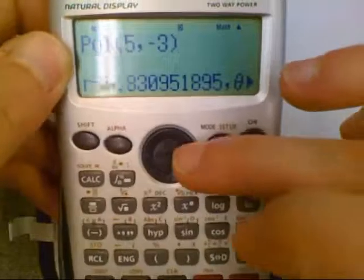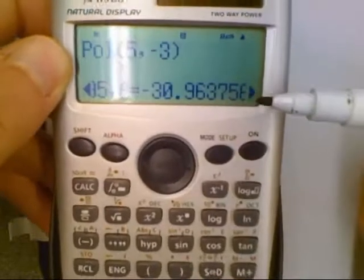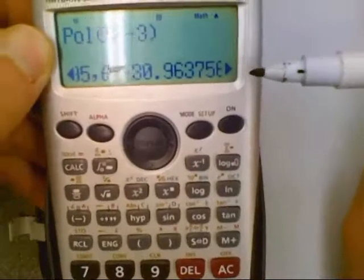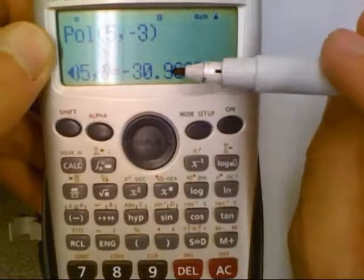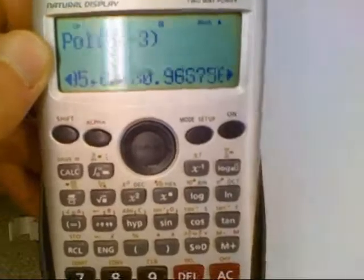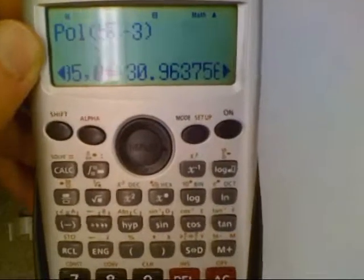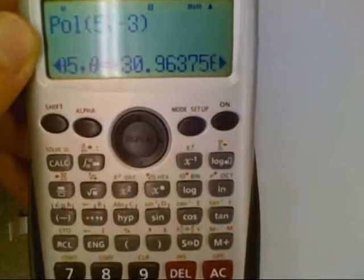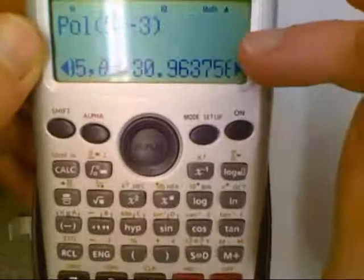On the Casio, this is real nice, it gives you both at the same time. You can scroll over and it also gives you the angle. However, it's like my classroom, we always want the positive form of this angle. If it's an angle between 180 degrees and 360 degrees, they're going to give you a negative angle.